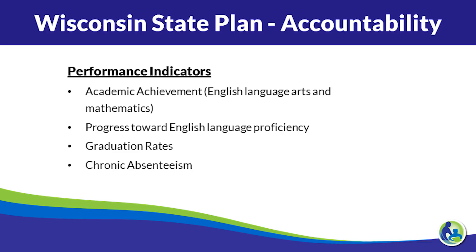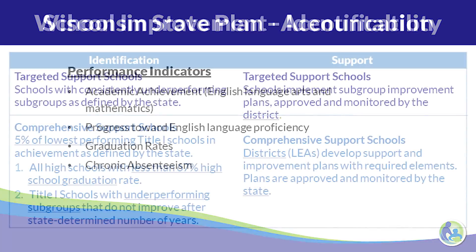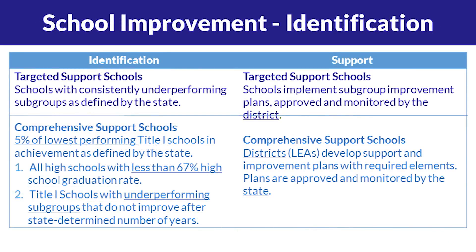We're looking at academic achievement — in other words, how students do on the state test related to English language arts and math — as well as progress towards English language proficiency, graduation rates, and chronic absenteeism. In terms of school improvement, we look at identifying schools based on those performance indicators.